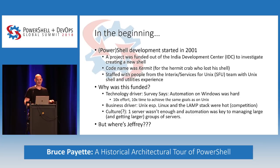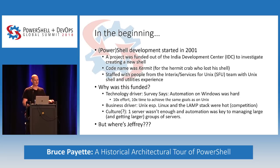The code name at the time was Kermit, because the person organizing this project had a child who had a kids' book about Kermit the hermit crab who lost his shell. I think we kept the Kermit name for about six months — it does not show up in the source code anywhere. The project was staffed by people from the Services for Unix team, which included a product called Interix, an extended version of the POSIX subsystem for Windows that was almost fully Unix compliant.